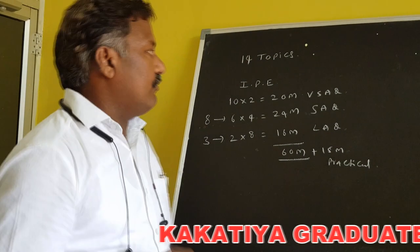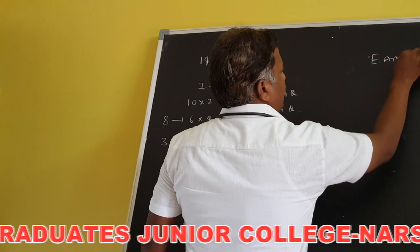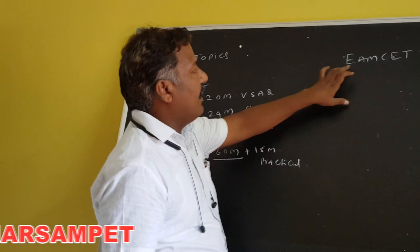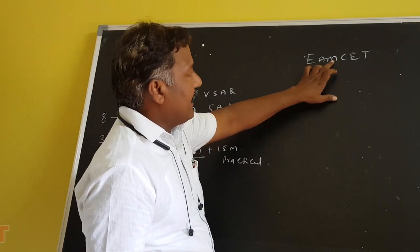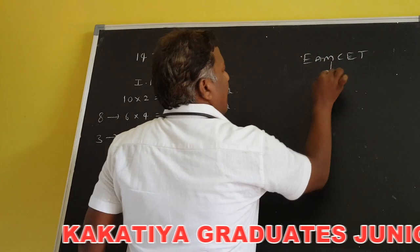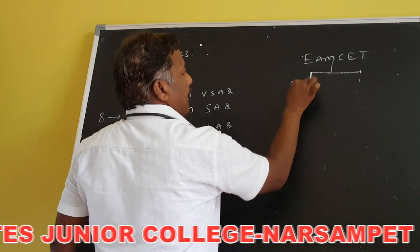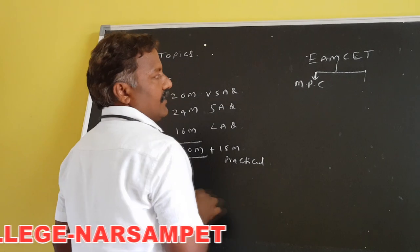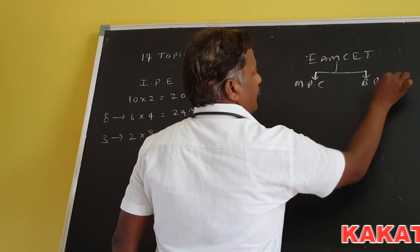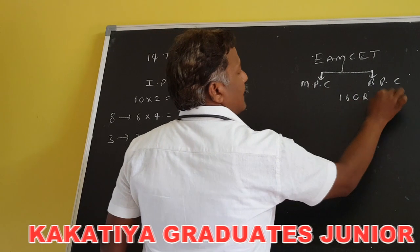For example, in EAMCET — the Engineering, Agricultural and Medical Common Entrance Test — this exam is for both BiPC and MPC students. MPC students write for the engineering stream and BiPC students write for the medical stream. The paper has a total of 160 questions worth 160 marks.